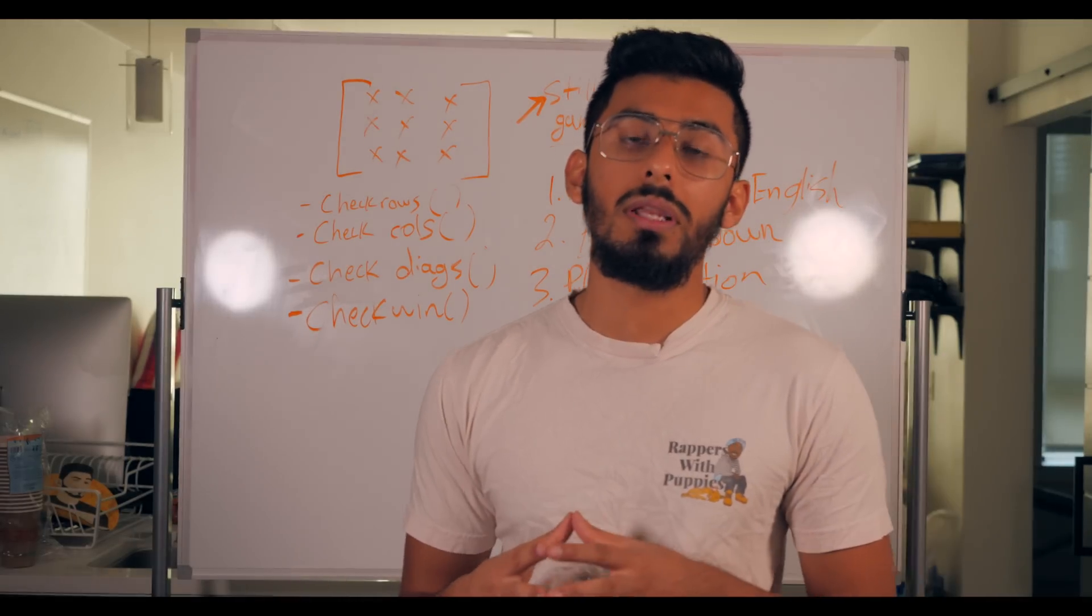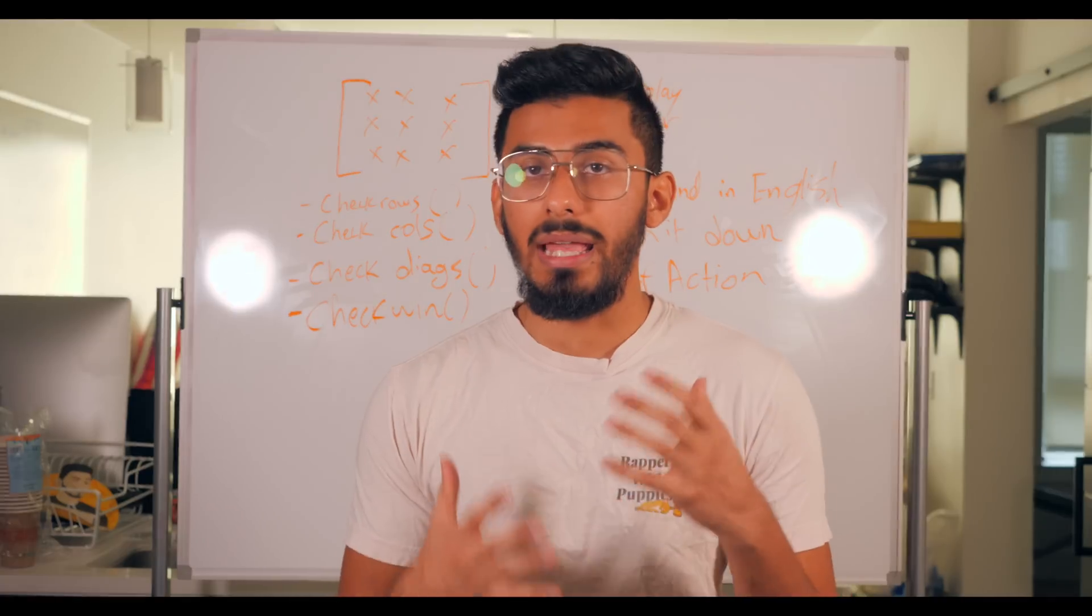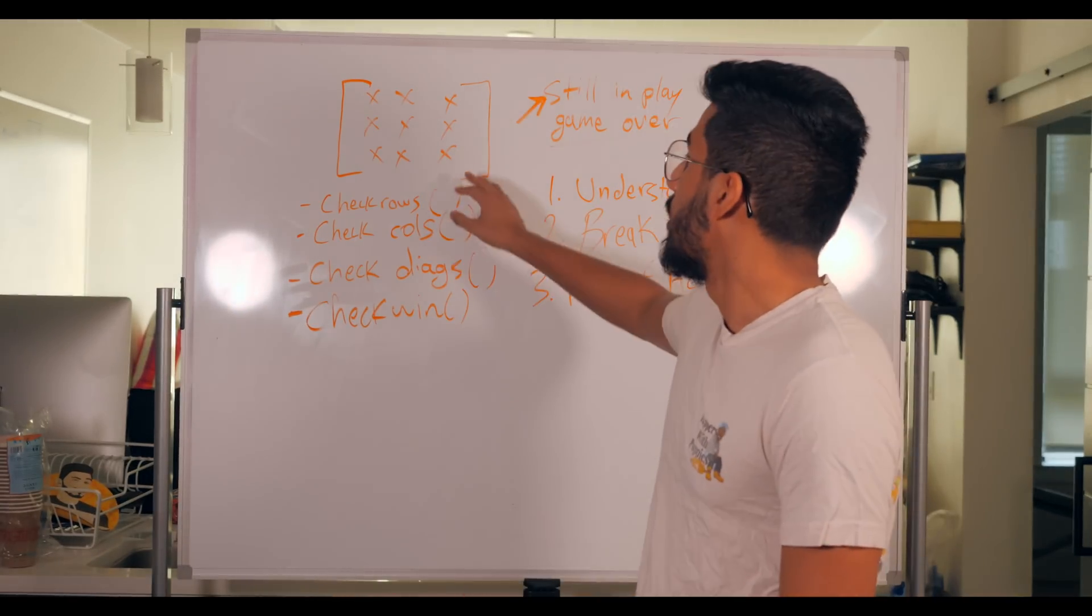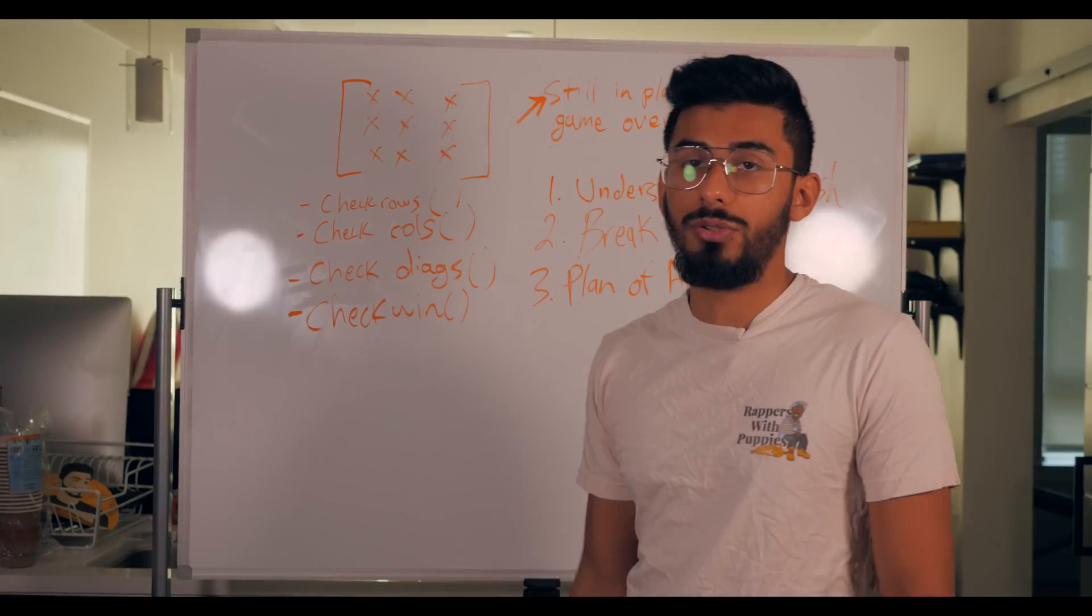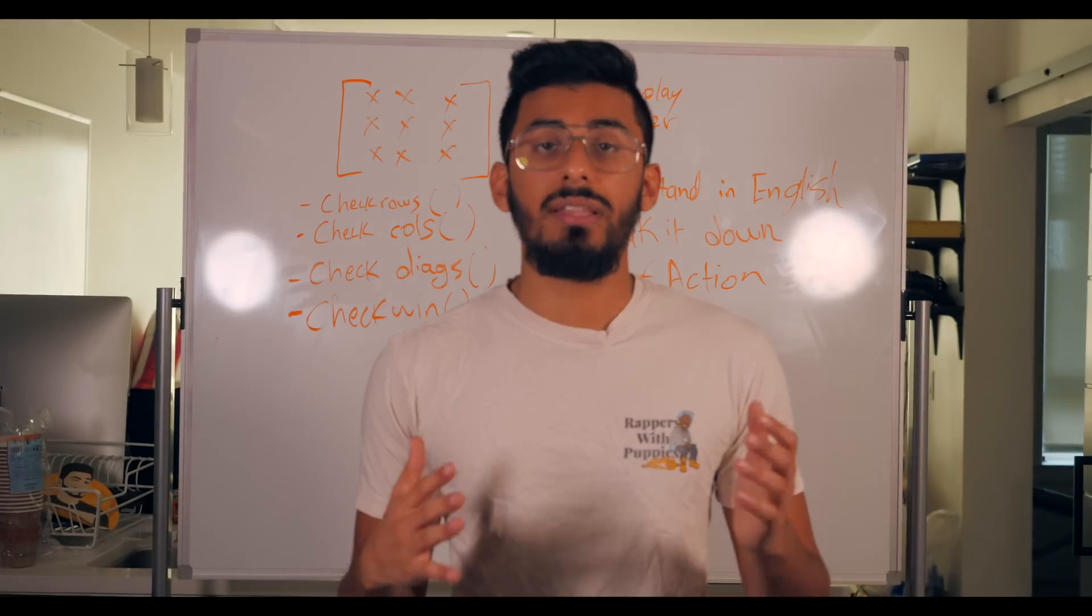And then once you get inside of a function, that's when you start needing to worry about what data structure you'll be using, how you'll be actually making it happen. For example, are you gonna be using a dictionary, or are you gonna be using a list of lists to demonstrate a 2D board? Those are the things that you're gonna need to think about later.